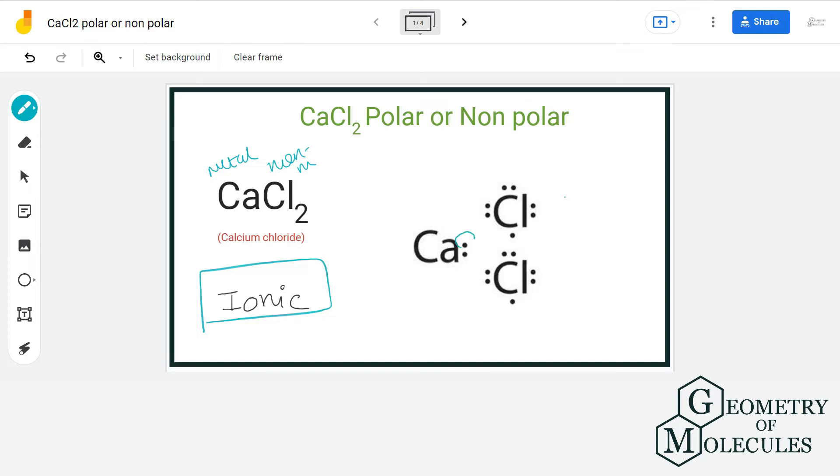So here calcium will donate its two electrons to chlorine and it will gain a plus two charge, and chlorine will gain a negative charge by accepting one electron.